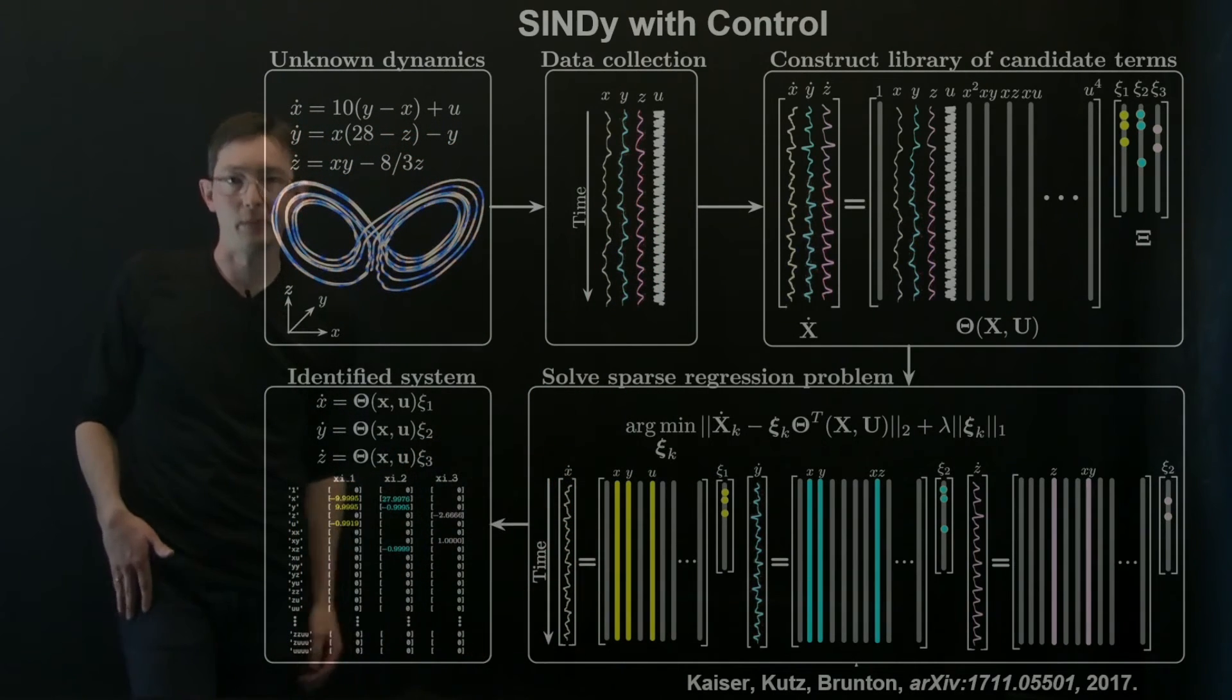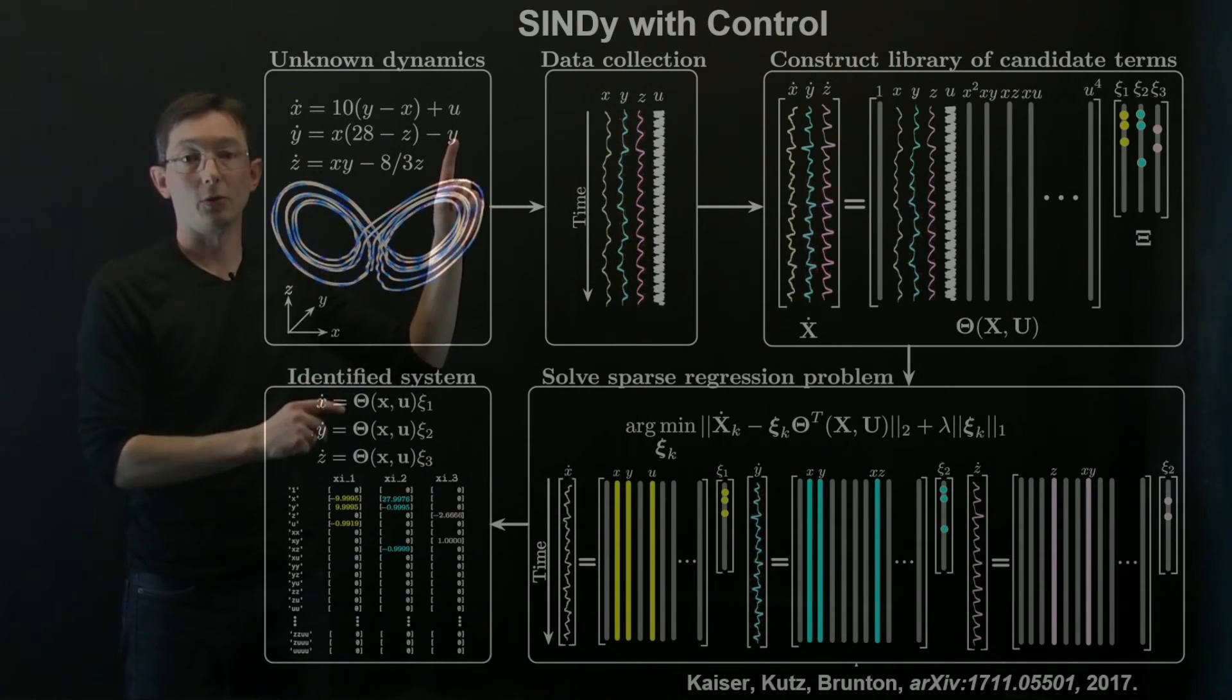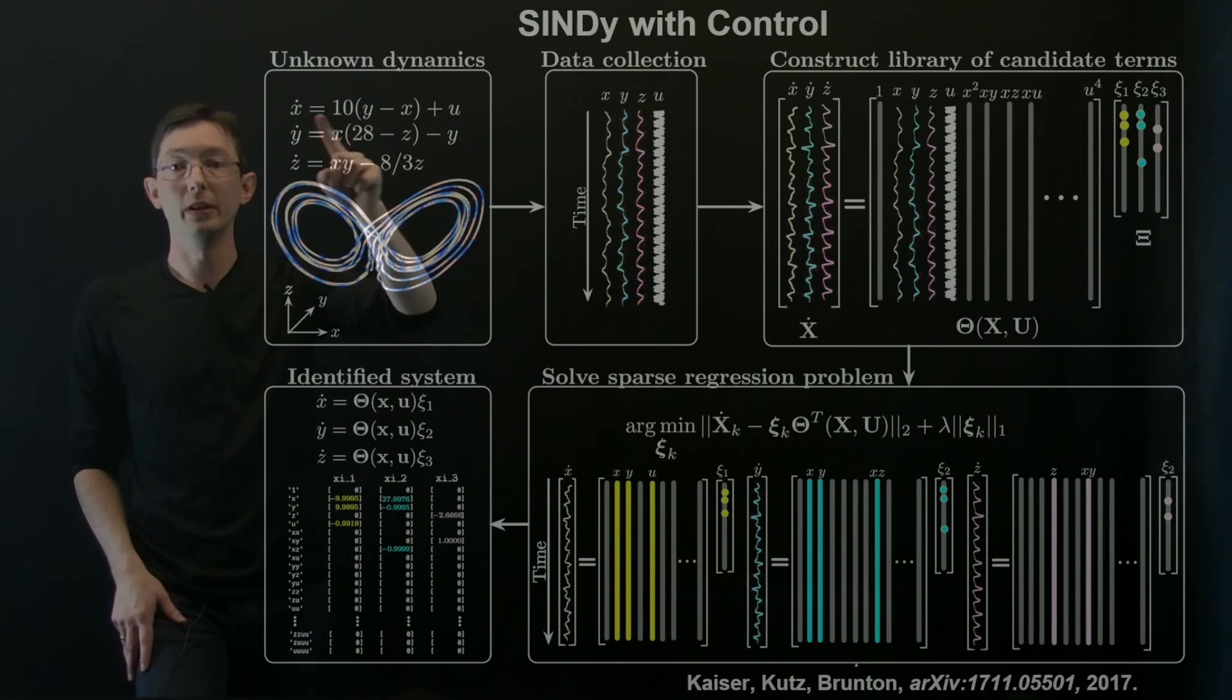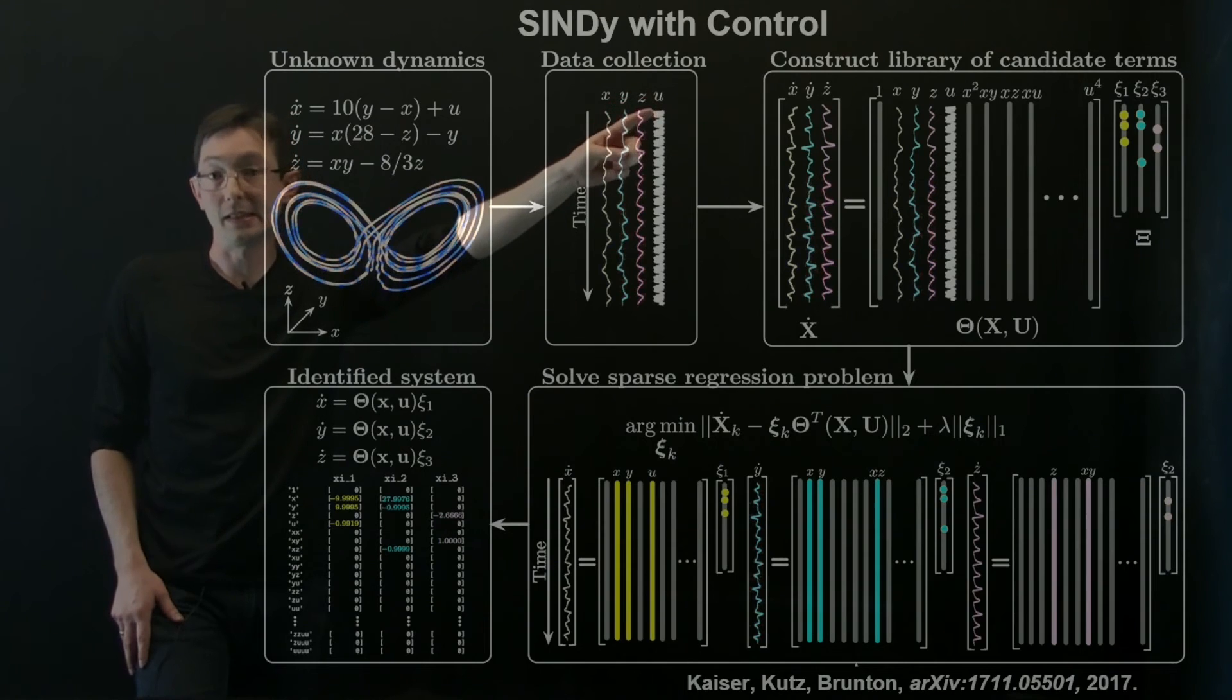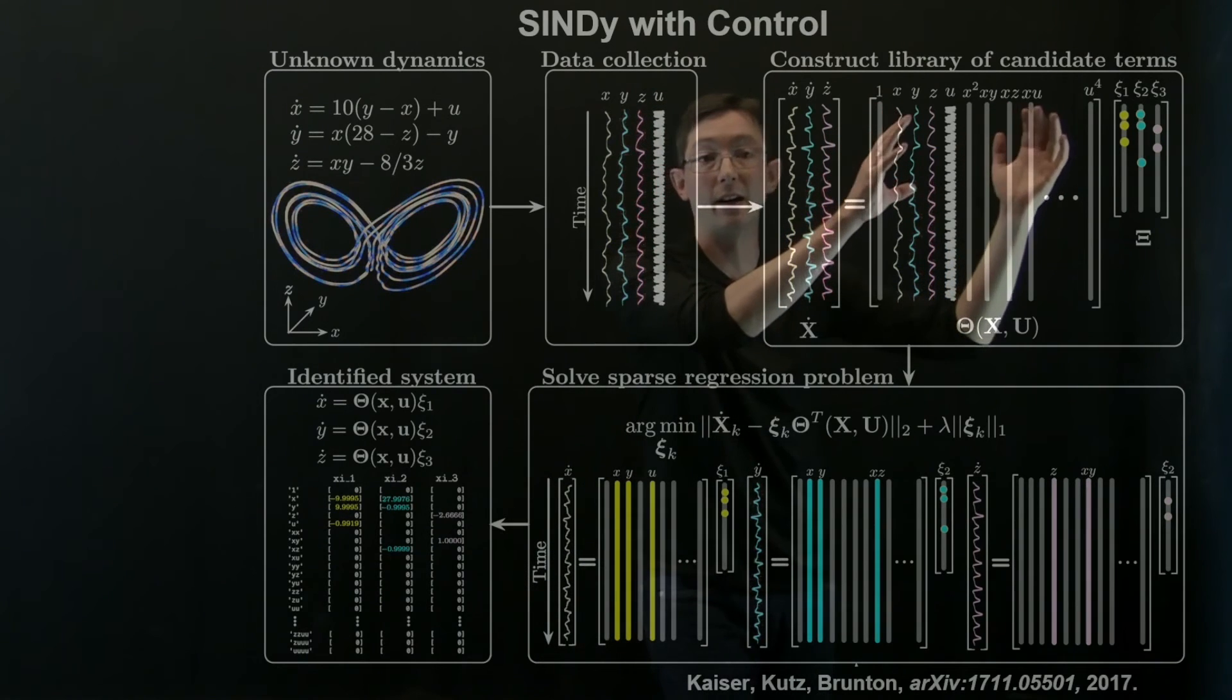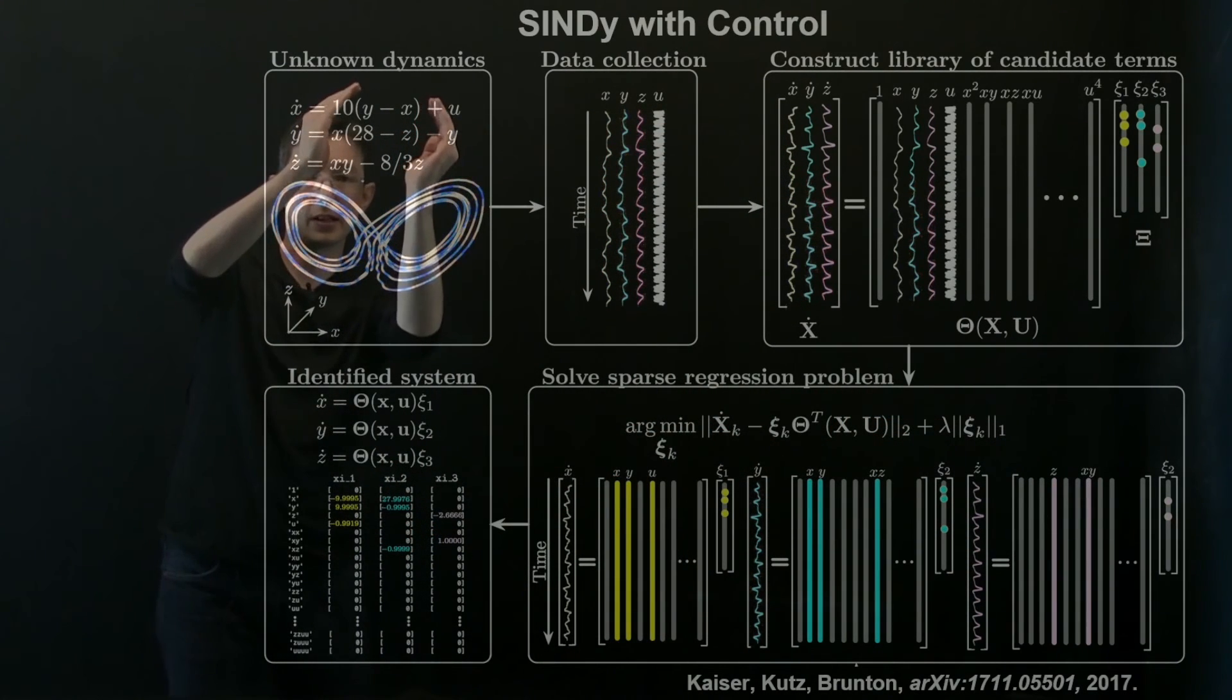And here's a nice diagram that Eurika Kaiser made in this archive paper for the Lorenz system. So this is basically that big SINDy picture but now with control. So here we have our Lorenz dynamics with some actuation u in the first state x. So now I have my data collection x, y, and z and u, and now I do this sparse regression in this augmented library that includes nonlinear functions of my states and control. And what you find is you can simultaneously identify the unforced dynamics and the effective actuation.